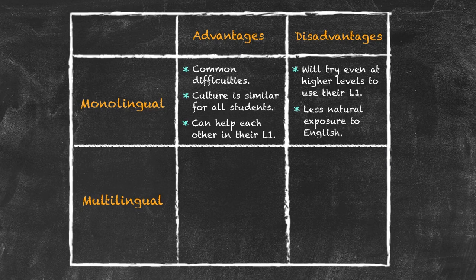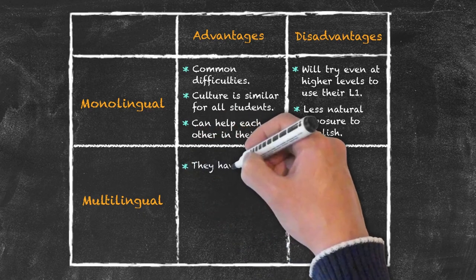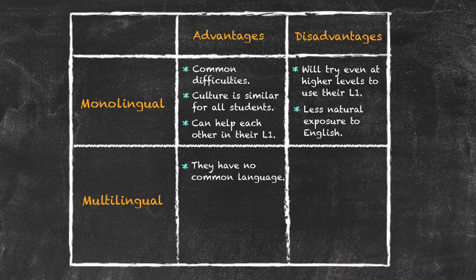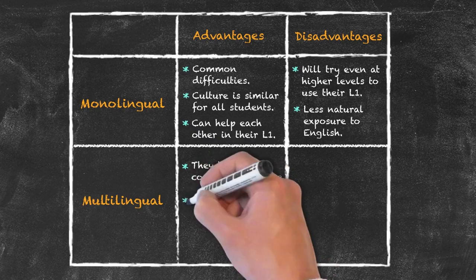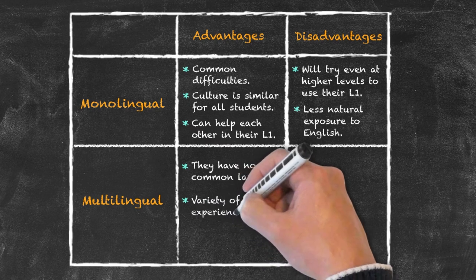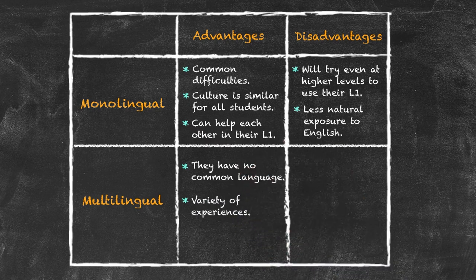What about the multilingual class? What are some of the advantages of teaching those? One advantage is that they have no common language — they come from different countries and all speak a different first language. So their only common language in that situation is going to be English. Another advantage is that because they come from different countries, they will have a large variety of experiences that can be used within our classroom. Additionally, because they're learning the language in an English-speaking country, they are going to have more exposure to the English language.